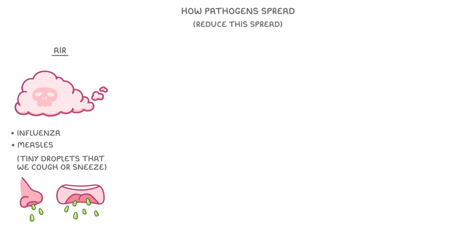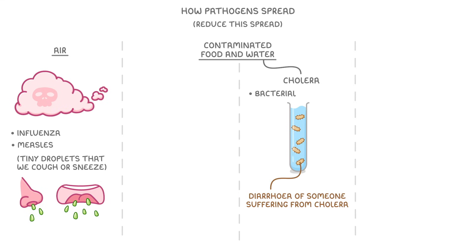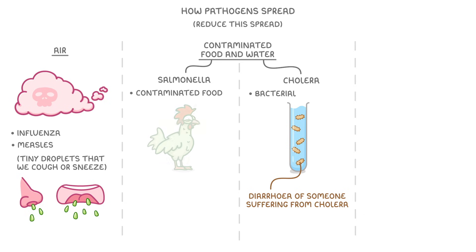Another route is through contaminated food and water. For example, cholera is a bacterial disease which is spread by drinking water that's been contaminated by the diarrhoea of somebody already suffering from cholera. Meanwhile, salmonella bacteria is spread by eating contaminated food, particularly chicken.